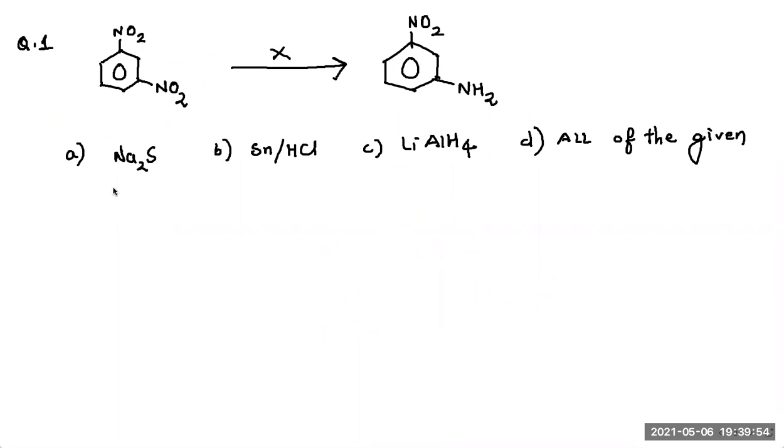Now here you see a molecule of meta-nitrobenzene, that is meta-dinitrobenzene or 1,3-dinitrobenzene. Now it is asking if you want to convert one of the group to amino, that is you want a meta-nitroaniline, what shall be used.